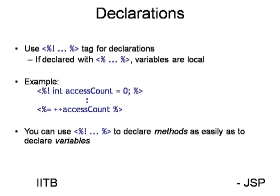Next is the declaration tag. With a declaration, if you want to declare any variable, you use the declaration tag. The key feature is that whatever you declare is available across the entire page — it is a global variable. I have declared one global variable — an integer called access count.